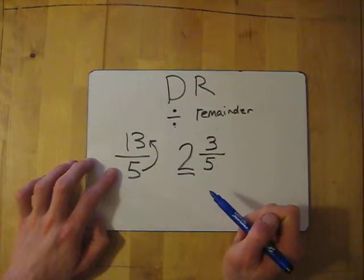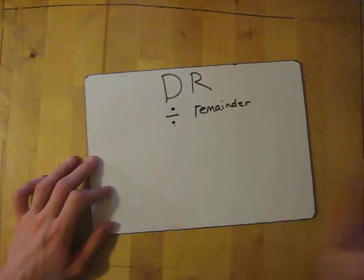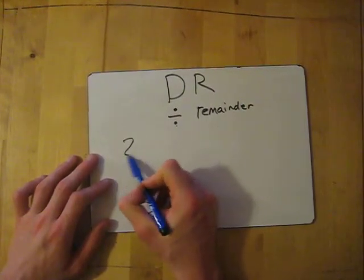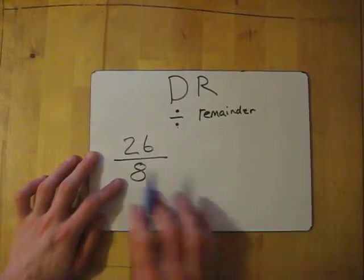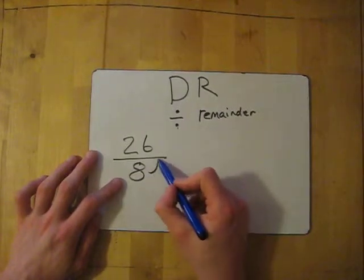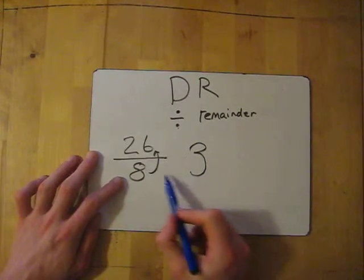Let's try another one—divide remainder, ask the doctor for an improper fraction. Let's do 26 over 8. We've got our improper fraction, we're going to turn it into a mixed number. Divide 8 into 26, which gives me 3 wholes.